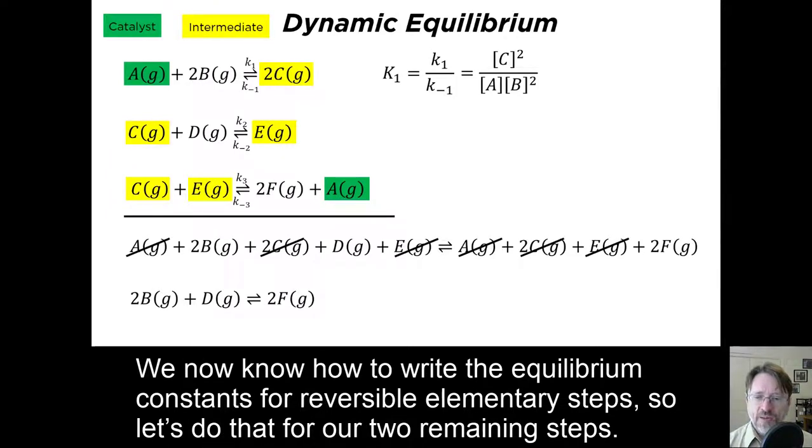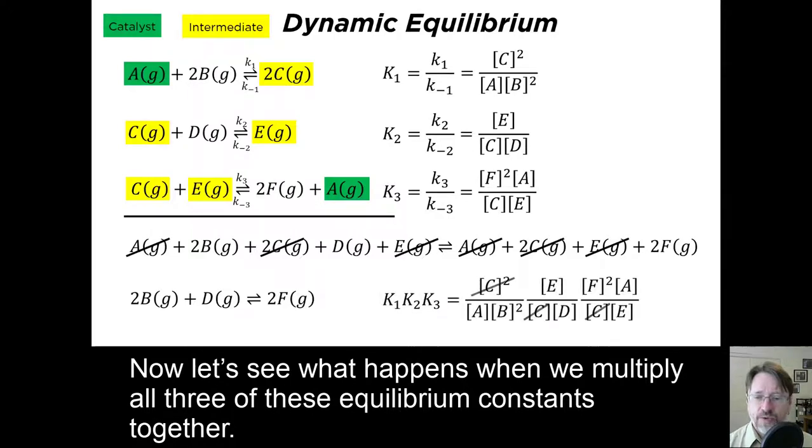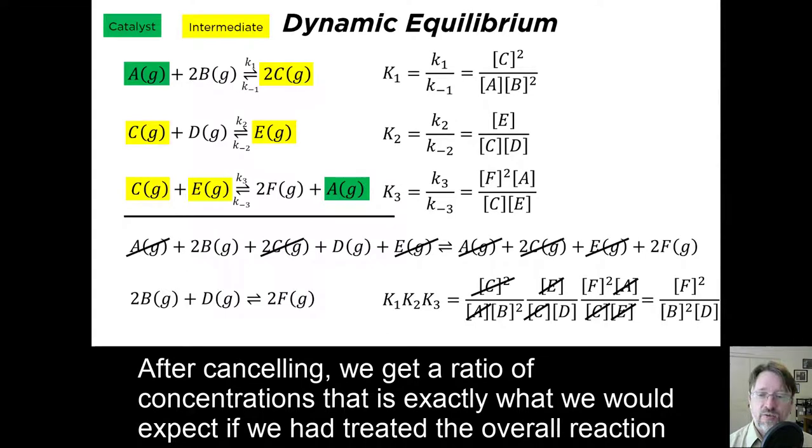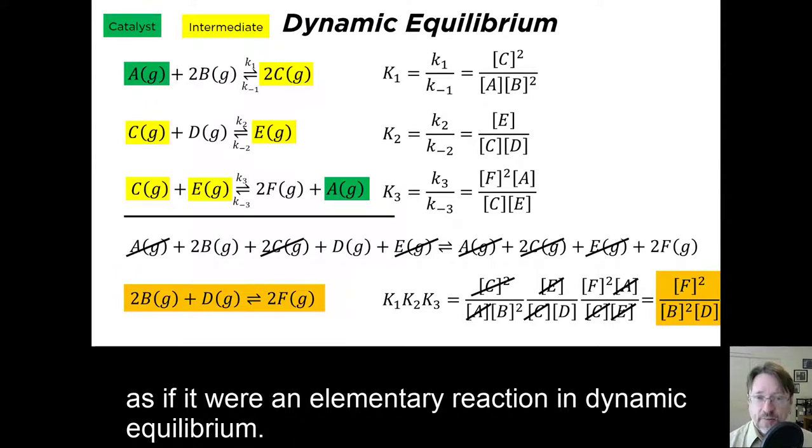We know now how to write the equilibrium constant for reversible elementary steps, so let's do that for our two remaining steps. Now let's see what happens when we multiply all three of these equilibrium constants together. After canceling, we get a ratio of concentrations that is exactly what we would expect if we had treated the overall reaction as if it were an elementary reaction in dynamic equilibrium.